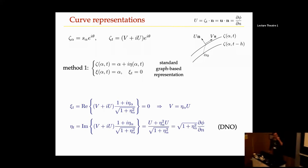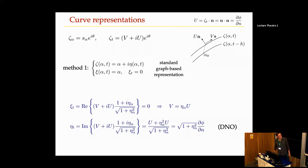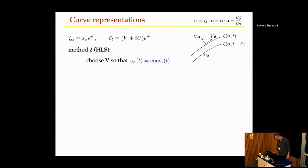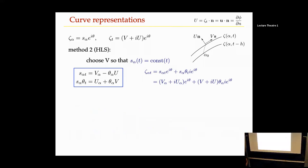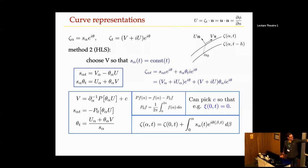Zeta is the arc-parameterization of the free surface. In the graph-based version, zeta is alpha plus i-eta. Method two is Hou-Lowengrub-Shelley, where you evolve theta — the tangent angle of the curve. You can keep s-alpha constant in space at any given time but evolving in time. If zeta-t is v plus i-u, the tangential and normal velocity of the curve, then equations governing arc length and angle evolution follow from zeta-alpha-t equals zeta-t-alpha.